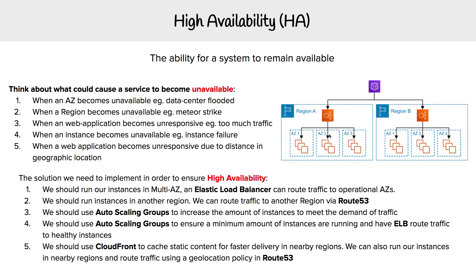Our last scenario: what happens when a web application becomes unresponsive due to distance in geographical location? Let's say someone's accessing our application from Asia, and we are in North America, and the distance is causing unavailability. We have a couple of options. We can use CloudFront, which can cache our static content — or even dynamic content to some degree — so there's content nearby to that user. Or we could run our servers in another region that's nearby and use Route 53's geolocation routing policy, so that if we have servers in Asia, it routes traffic to those servers.